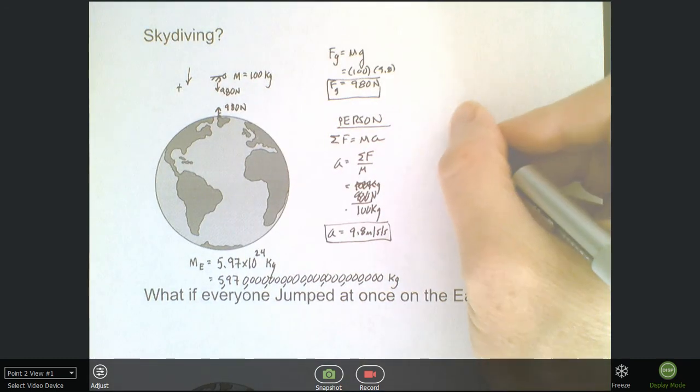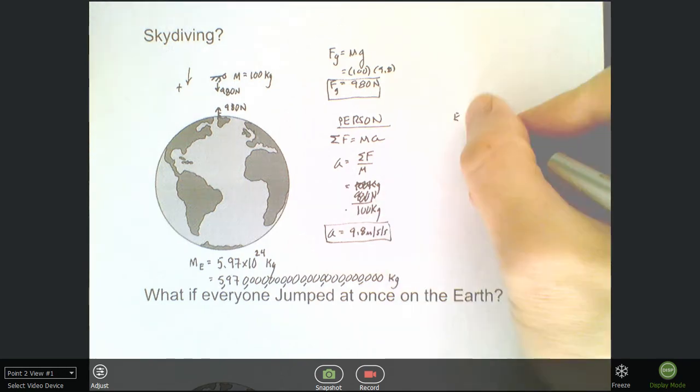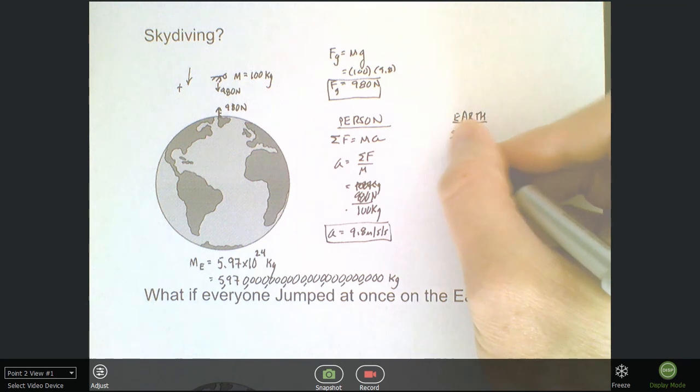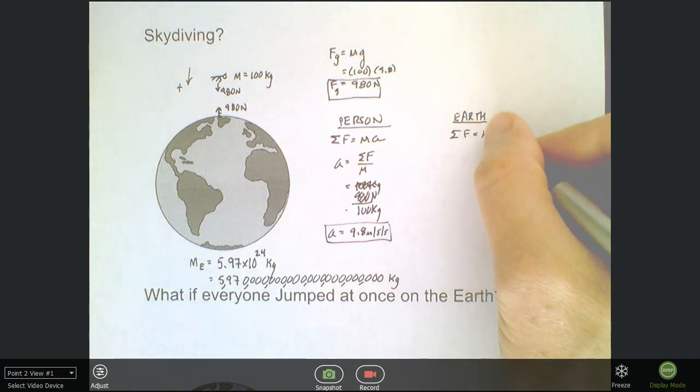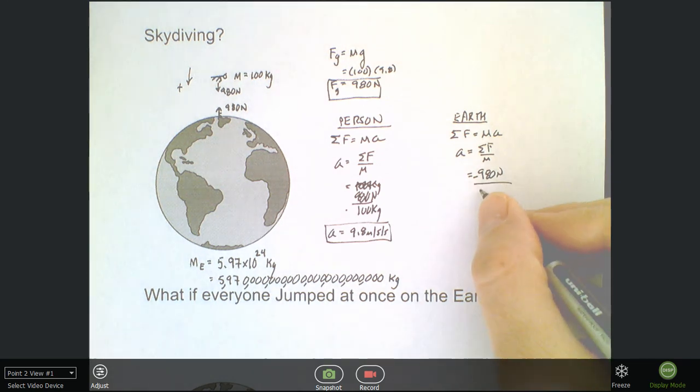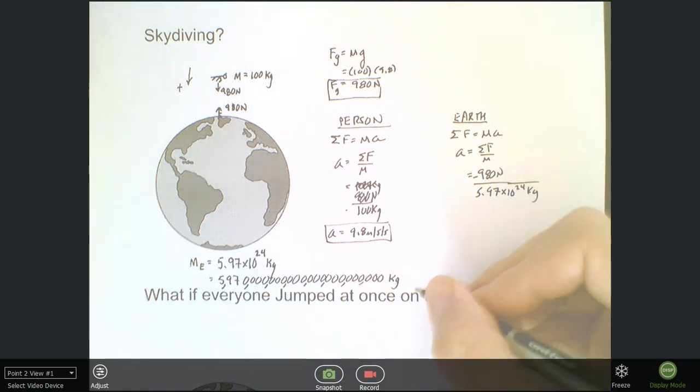Well, let's check out the earth, and that's down as positive. Here's the earth. Well, the earth is also going to experience an acceleration proportional to the force and the mass. The force is 980 newtons negative because it's pulling up. But the mass is 5.97 times 10 to the 24 kilograms, or that big, massive number.